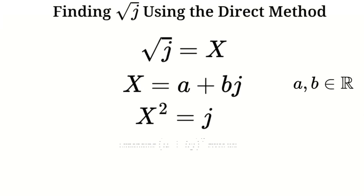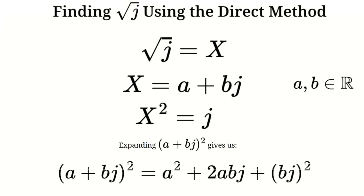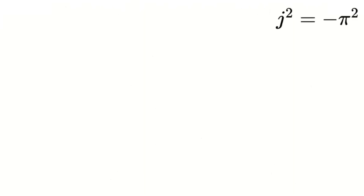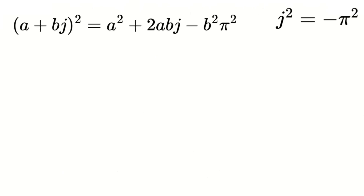Expanding (a + b·j)², we get a² + 2ab·j + b·j². Since we know that j² equals negative π², we substitute this into the equation. That gives us a² + 2ab·j minus b²·π².